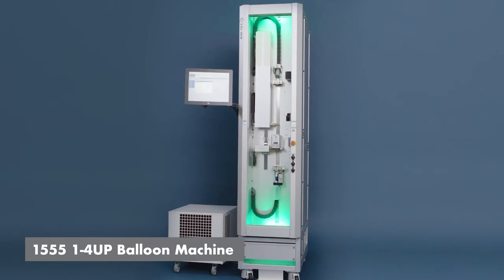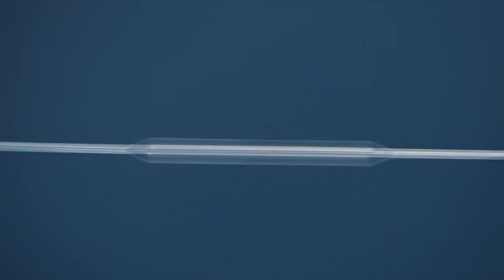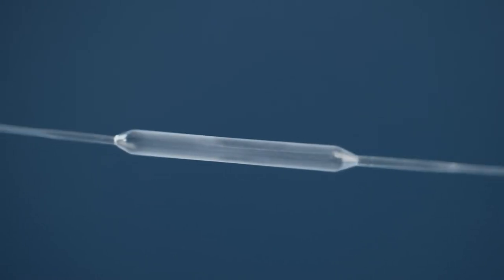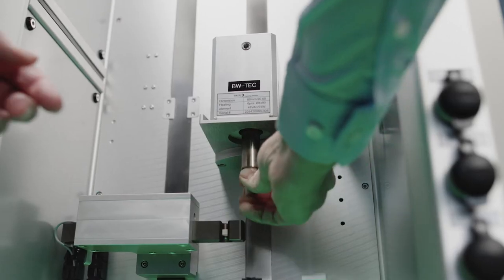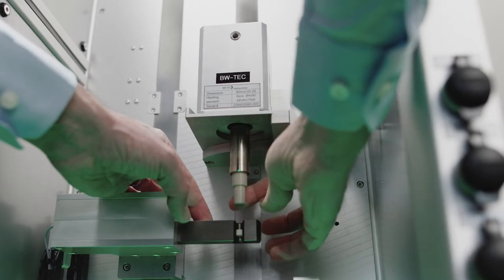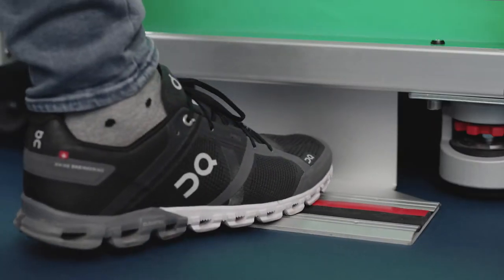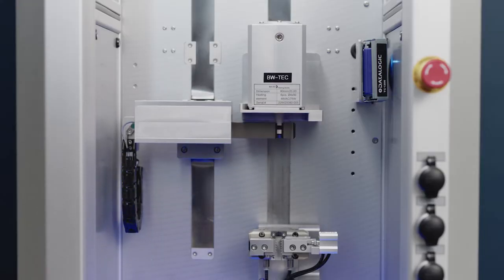The 1555 vertical balloon forming machine is designed to produce a wide range of polymer balloons for angioplasty and other medical applications. The electrically heated stretch blow molding process enables the production of very accurate and repeatable high-quality balloons with tight tolerances in an extensive variety of sizes and shapes.